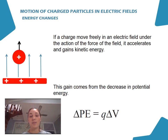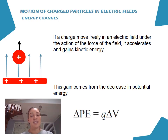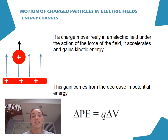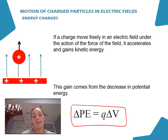Conversely, if a charge moves freely in an electric field under the action of the field's force, it accelerates and gains kinetic energy. For example, if two similar charges are released, the repulsion causes acceleration and a gain in kinetic energy. By conservation of energy, this gain in kinetic energy corresponds to an equal decrease in potential energy.